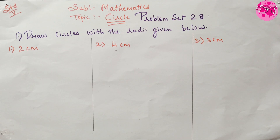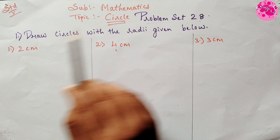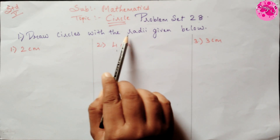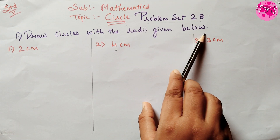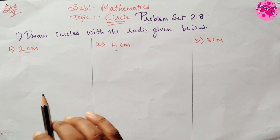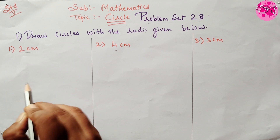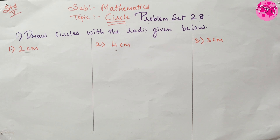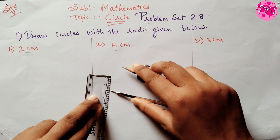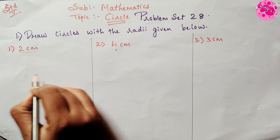Now let's move to Problem Set 28, Question 1: Draw circles of the given radius. The first one is 2 cm. To draw a circle with radius 2 cm, take a ruler and set the compass to a distance of 2 cm. Then take a point Q on the paper.